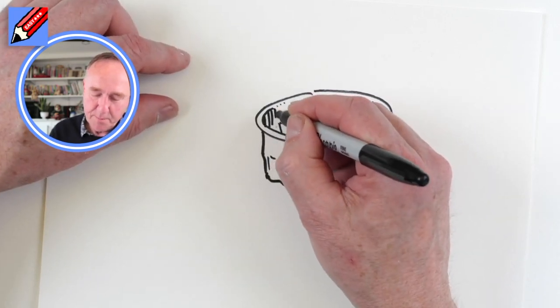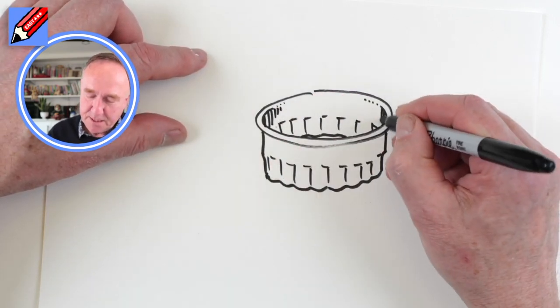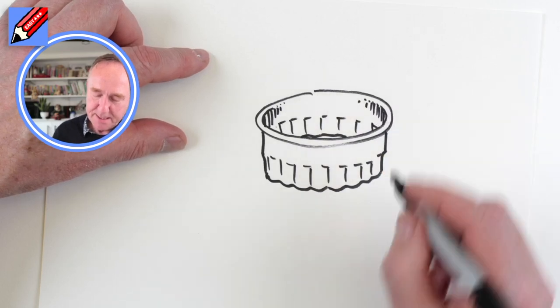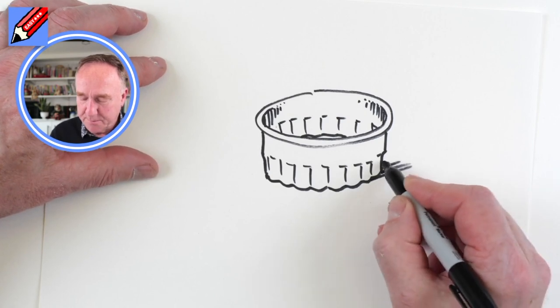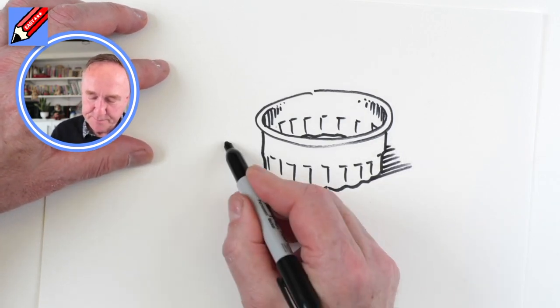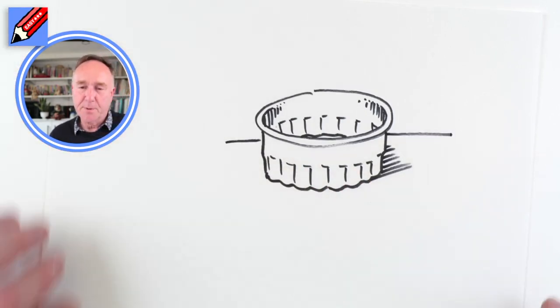We can maybe make it look a bit more curvy by putting some lines in there like that. And then we can put it on the table with some shading like that and the edge of the table like that.